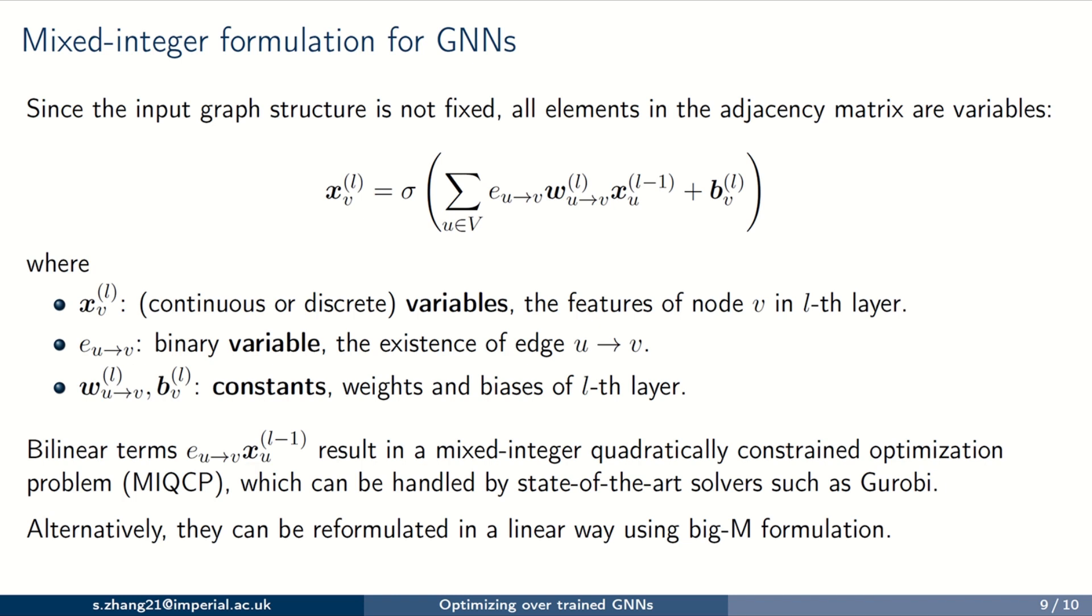After resolving the symmetry issue, the next challenge is how to encode a trained GNN into an optimization problem. This equation shows a bilinear formulation for a GNN layer, where node features X are variables. Both weight and bias are constants. Since the graph structure is not fixed, we introduce binary variables E to represent elements in the adjacency matrix. Alternatively, we can use BDM to replace these bilinear terms with linear constraints.